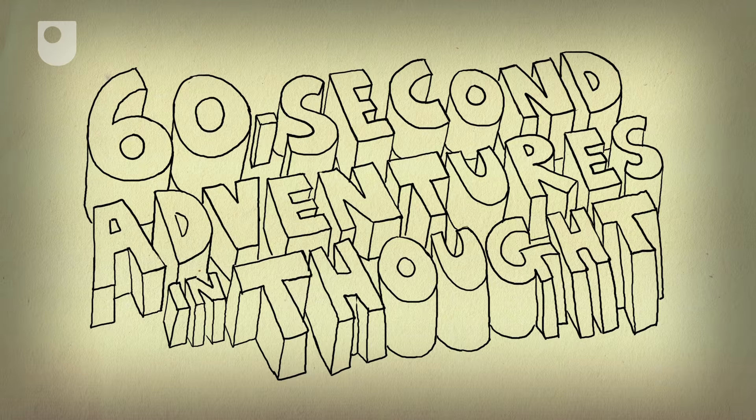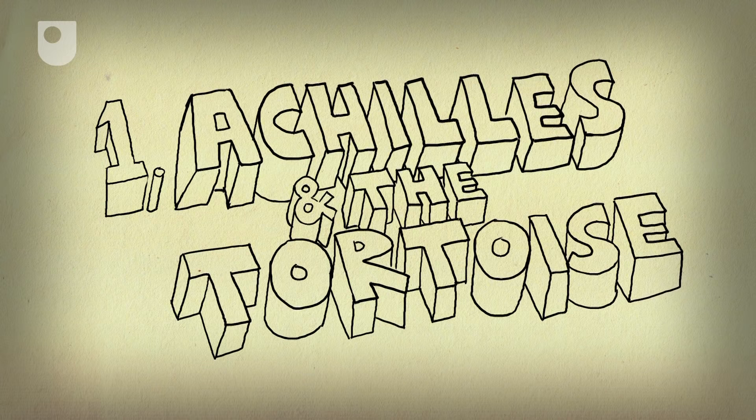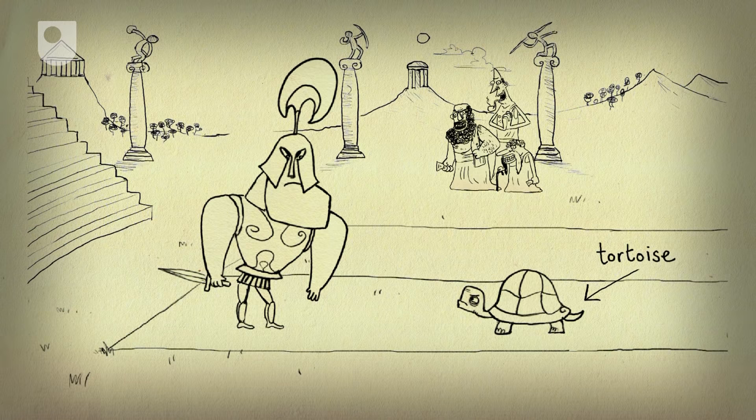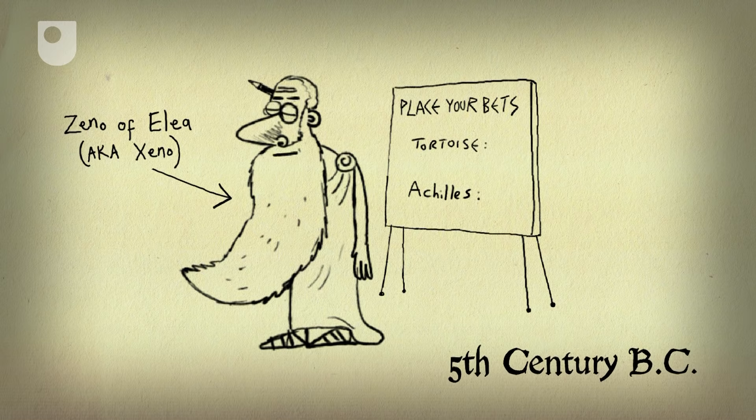60 Second Adventures in Thought Number 1: Achilles and the Tortoise. How could a humble tortoise beat the legendary Greek hero Achilles in a race? The Greek philosopher Zeno liked the challenge and came up with this paradox.